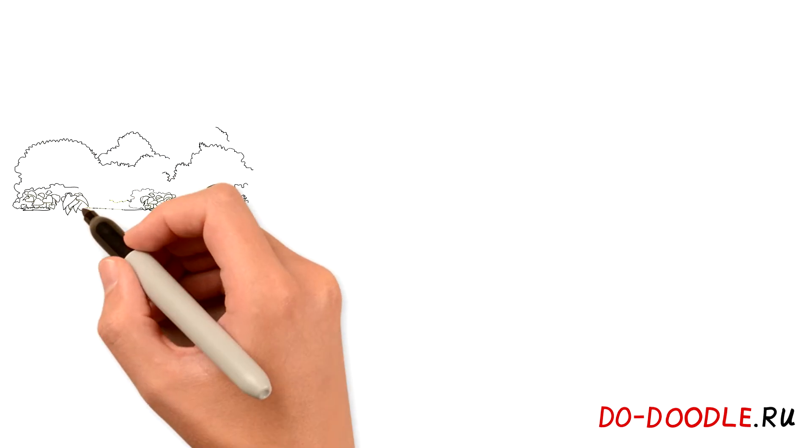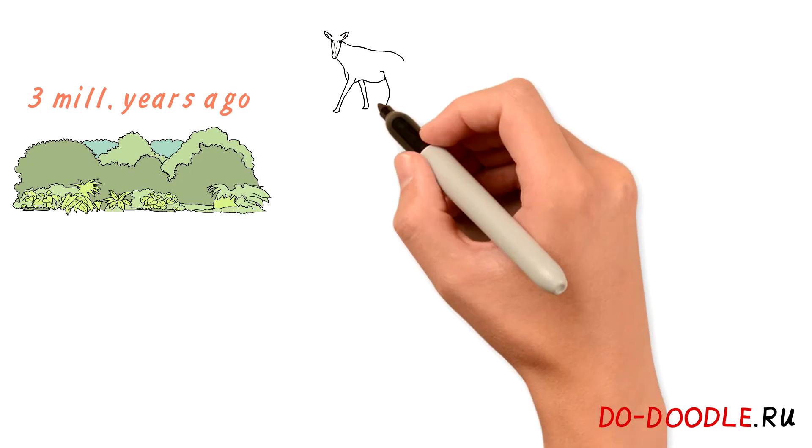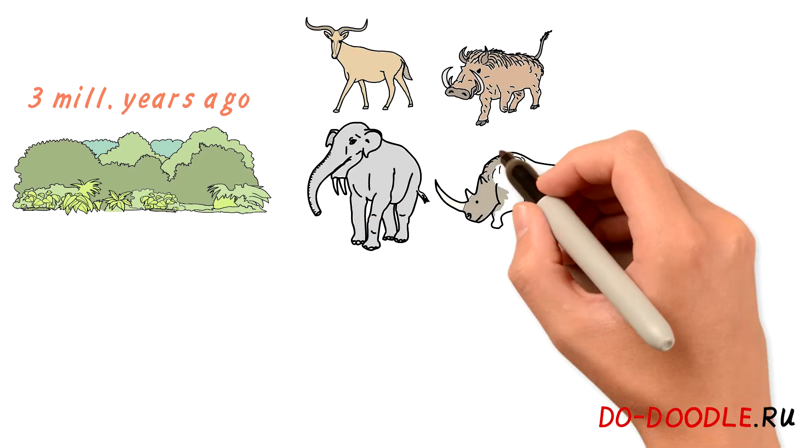The plains of Africa were covered with dense forests 3 million years ago. All this vegetation was consumed by giant antelopes, monstrous pigs, lots and lots of elephants and rhinos.